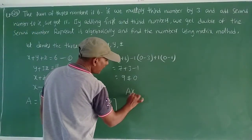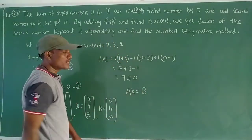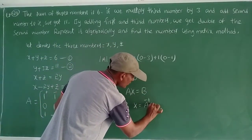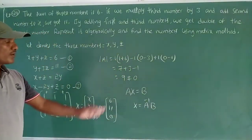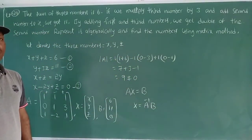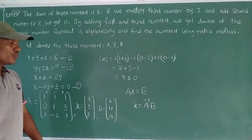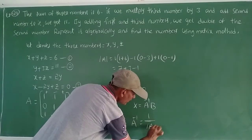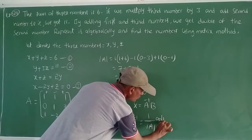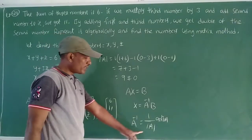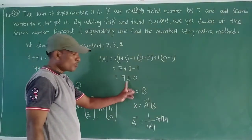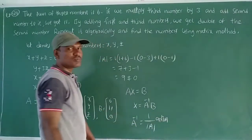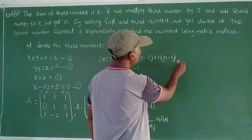Since capital AX equals B, we have X equal to A inverse B. Now find A inverse. A inverse formula: A inverse equal to 1 by delta A into adjoint A. Delta value is 9. Now I want adjoint A — same shortcut method.